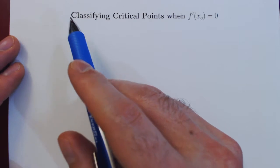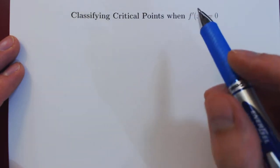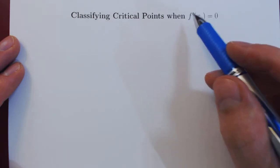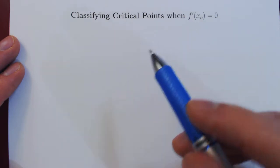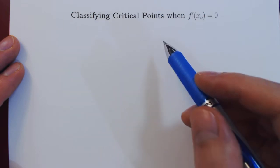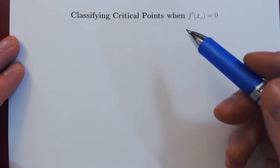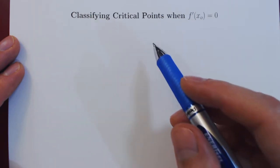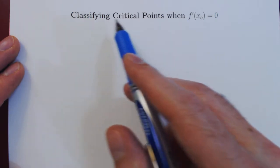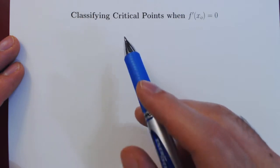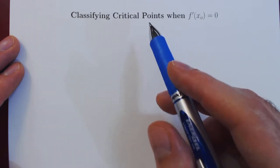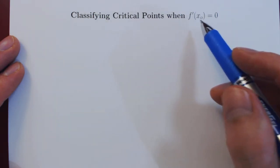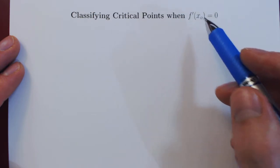In this video we want to discuss the idea of classifying critical points of a function when the critical points are of the first type — critical points where the derivative of the function is equal to zero. We've already discussed that critical points are very important when it comes to sketching a graph of a function, because at those points the function may change from increasing to decreasing or decreasing to increasing. Classifying critical points means figuring out what the function looks like at any given critical point. We will focus on the first type: critical points where the derivative is equal to zero.